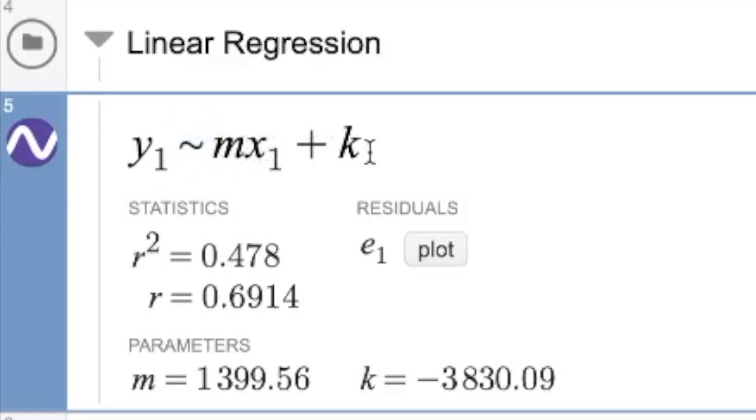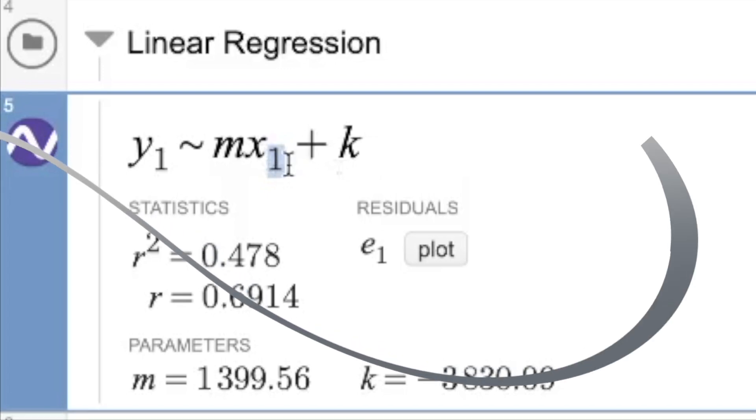y1 tilde mx1 plus k. Notice that that m value and k value are shown down below. It tells me what those parameters should be for this to be the line of best fit.